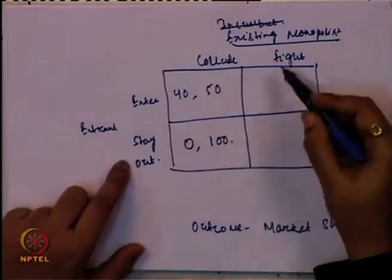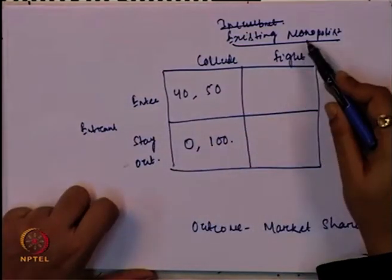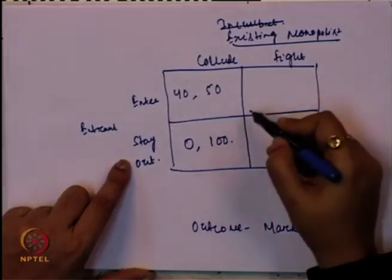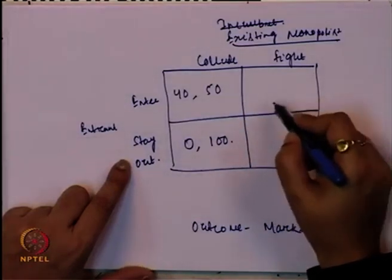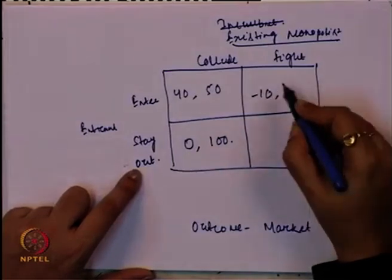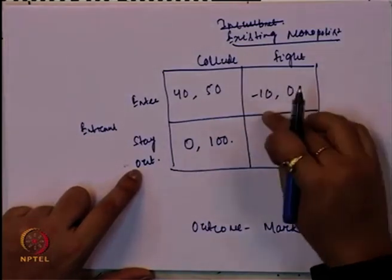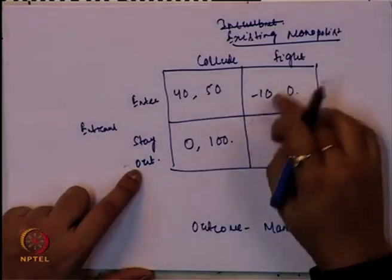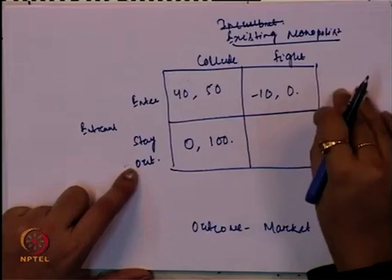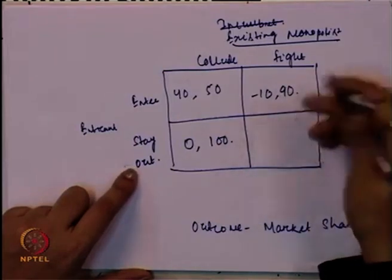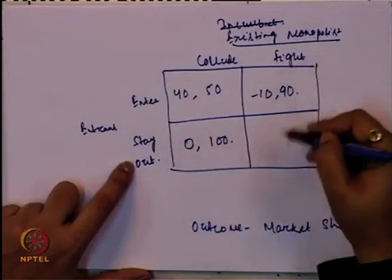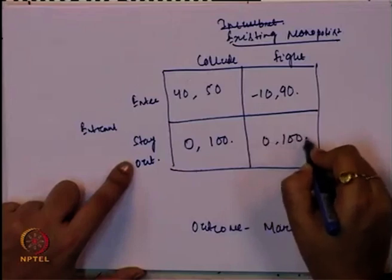If the entrant decides to enter and the existing monopolist decides to fight, then we get a payoff of minus 10 for the entrant and 0 for the monopolist. Why minus 10 and 0? Because if the entrant is entering and the existing monopolist is fighting, maybe no one is getting a market share — it goes to someone else; we can say it goes to 90. If entrant stays out, there is no choice for fight, so this comes again to 0 and 100.